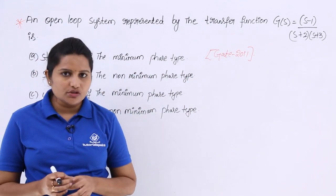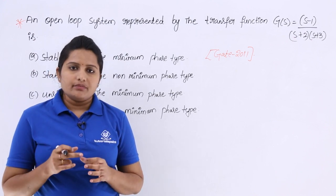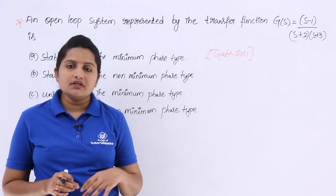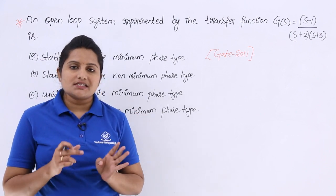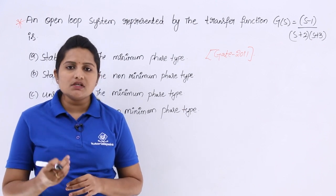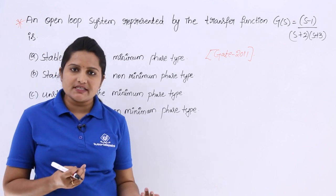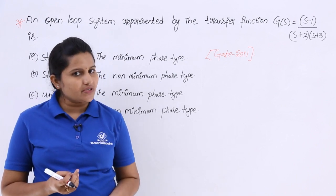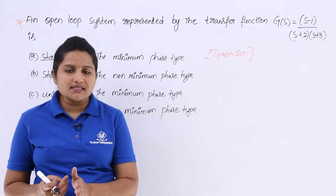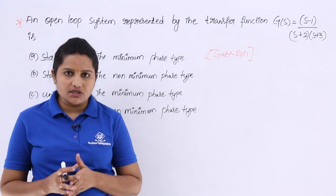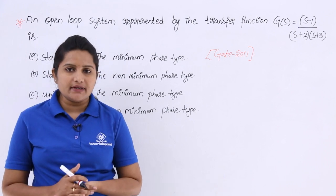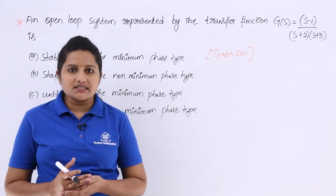Before getting into that, we need to discuss stability, minimum phase system, and non-minimum phase system. Stability of a system always depends upon the poles. If all poles are in the left half of the s-plane, then the system is stable. If any one pole is on the j-omega axis, then it is marginally stable. If any one pole is in the right half of the s-plane, then it is an unstable system.